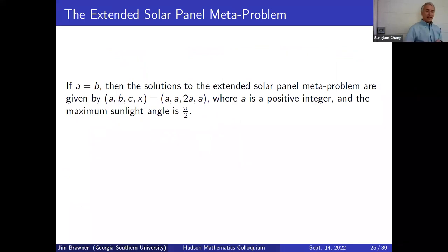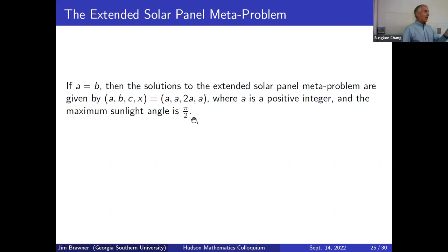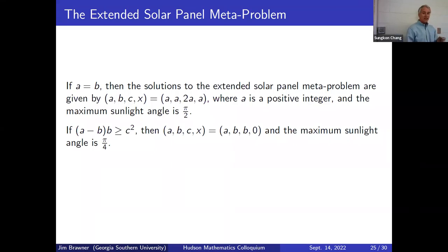In the case A = B, the four-tuple (A, A, 2A, A) works, giving maximum angle π/2 — the solar panel goes in the middle. For the second case, where the panel is placed against the left wall (x = 0), the angle is π/4 when C = B, valid for any A ≥ B.